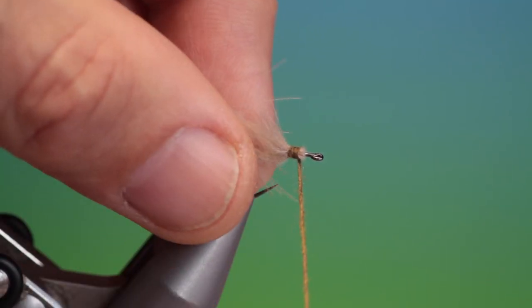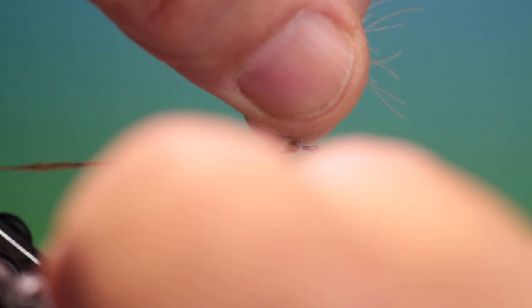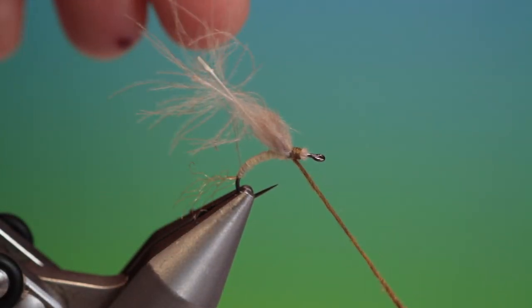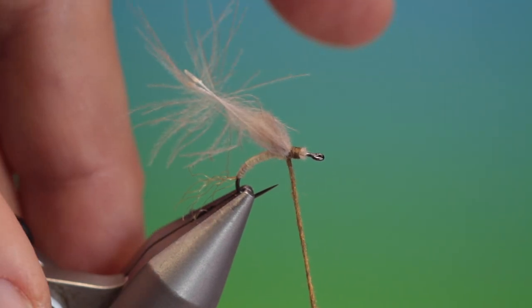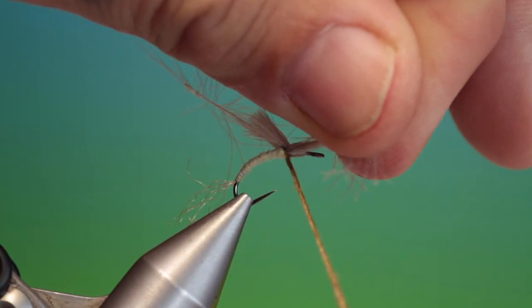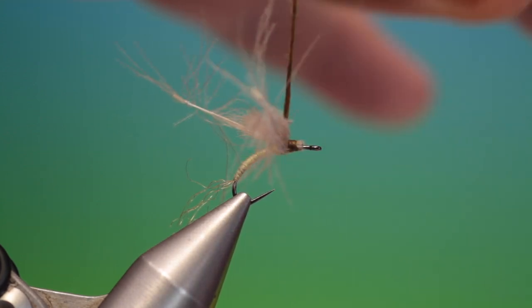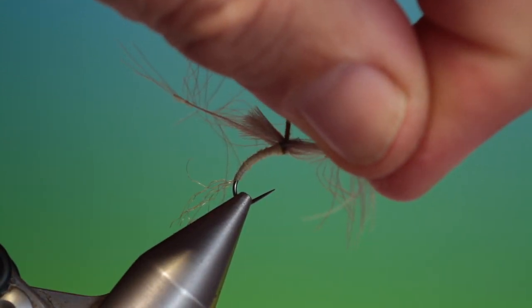And we'll make a couple of turns there. And then what we do is we lift everything up, including the wing, and we go behind the whole thing. And that holds everything up. And we'll pull this wing forward, or the legs, should I say.